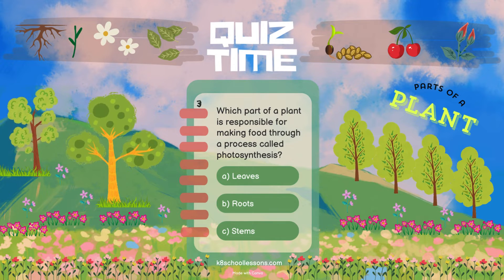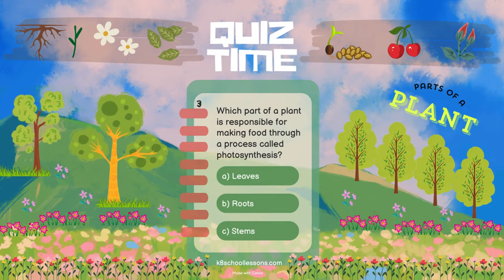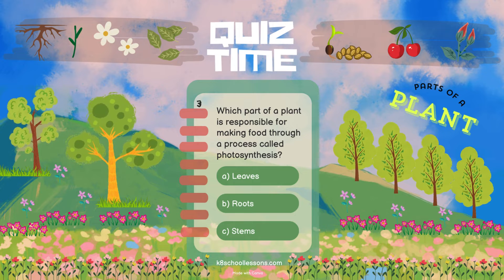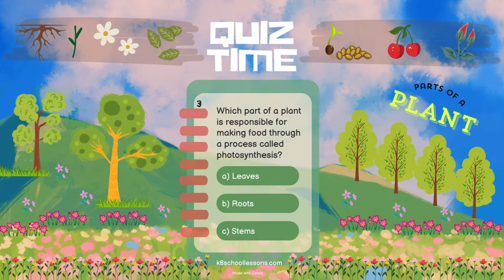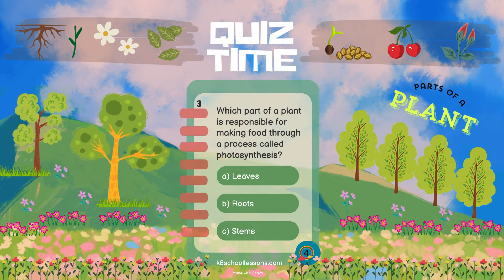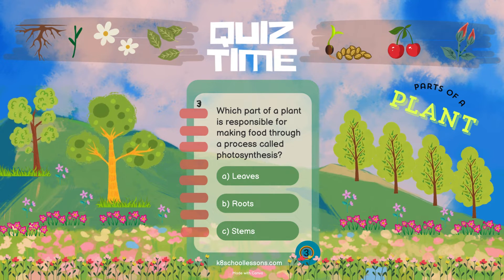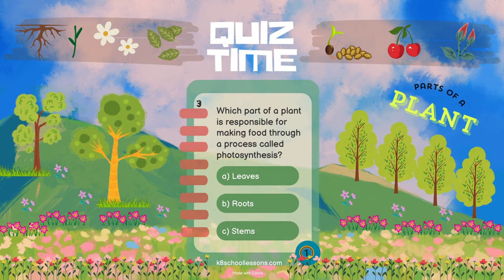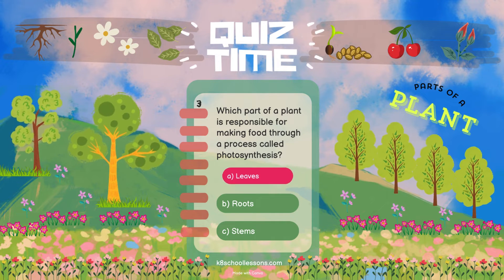Which part of a plant is responsible for making food through a process called photosynthesis? Leaves.